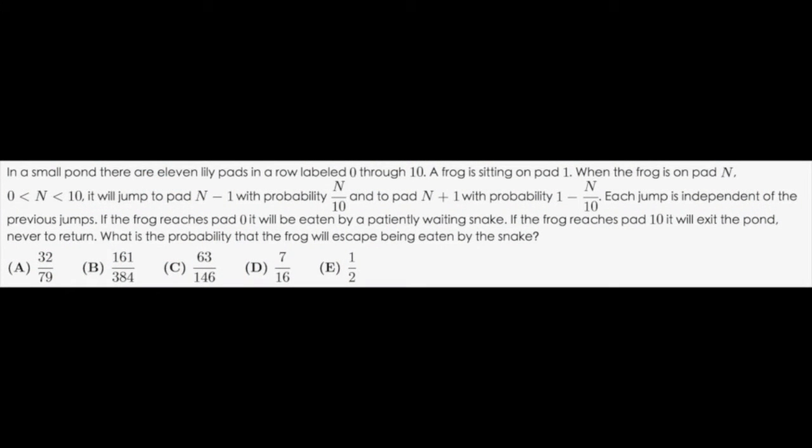In a small pond, there are 11 lily pads in a row labeled 0 through 10. A frog is sitting on pad 1. When the frog is on pad n, where 0 < n < 10, it will jump to pad n-1 with probability n/10, and to pad n+1 with probability 1 - n/10. Each jump is independent of the previous jumps. If the frog reaches pad 0, it will be eaten by a patiently waiting snake. If the frog reaches pad 10, it will exit the pond, never to return. What's the probability that the frog will escape being eaten by the snake?